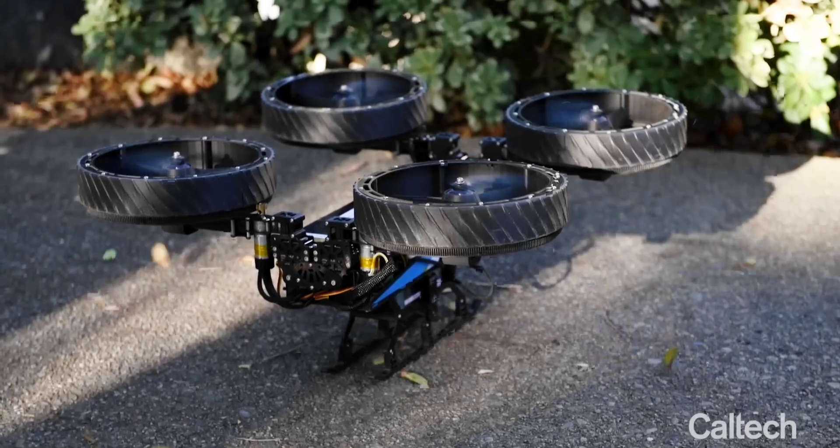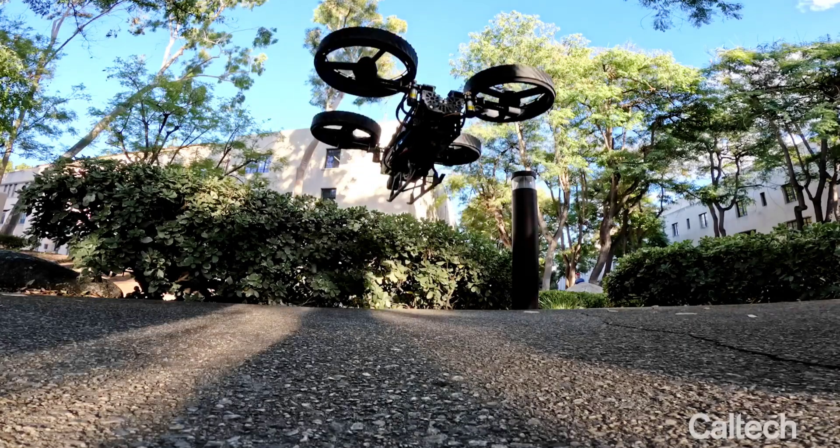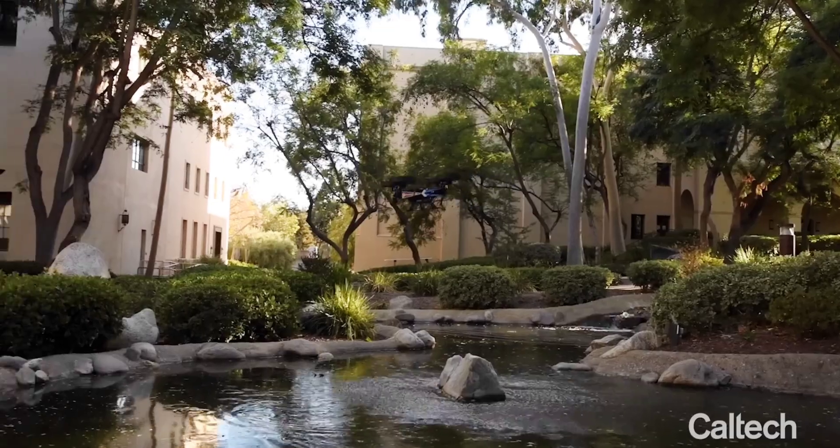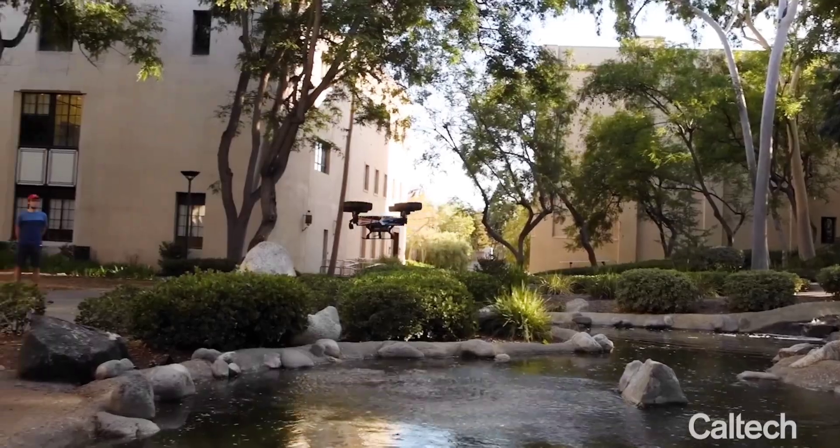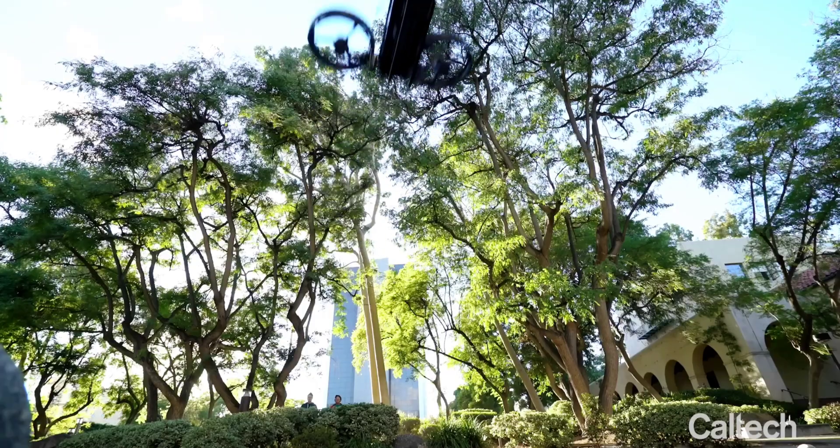That particular robot flew like a regular quadcopter drone when airborne, with its four shrouded propellers spread out horizontally.